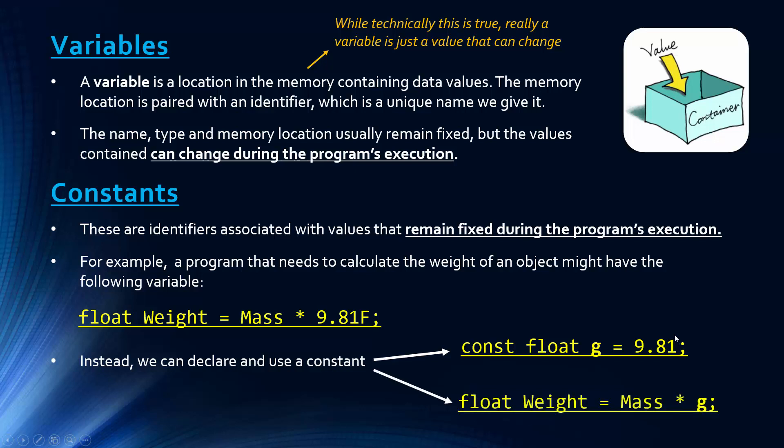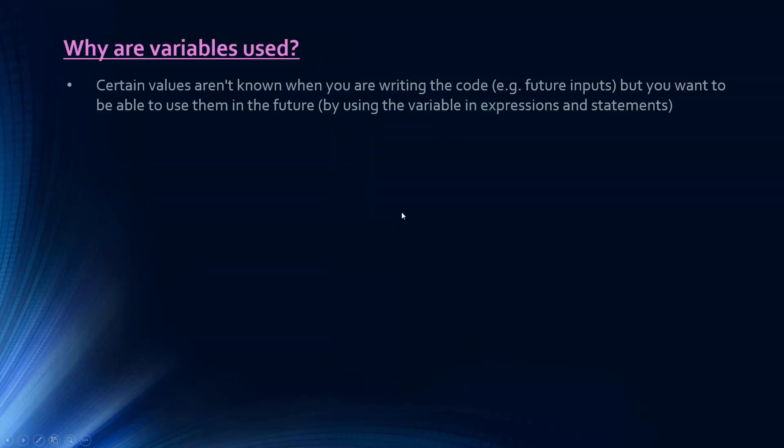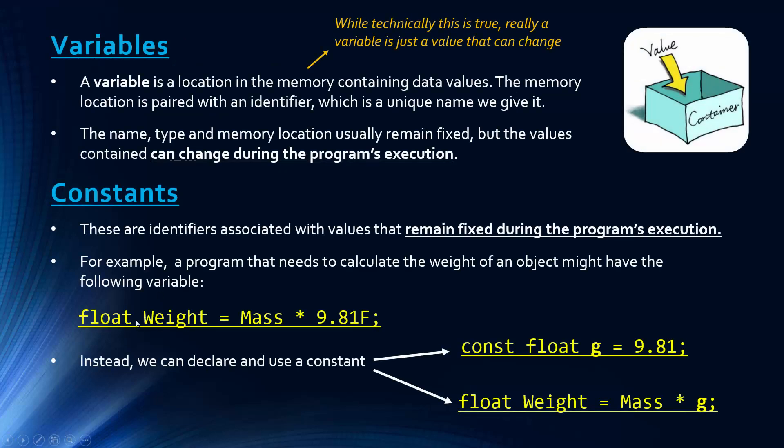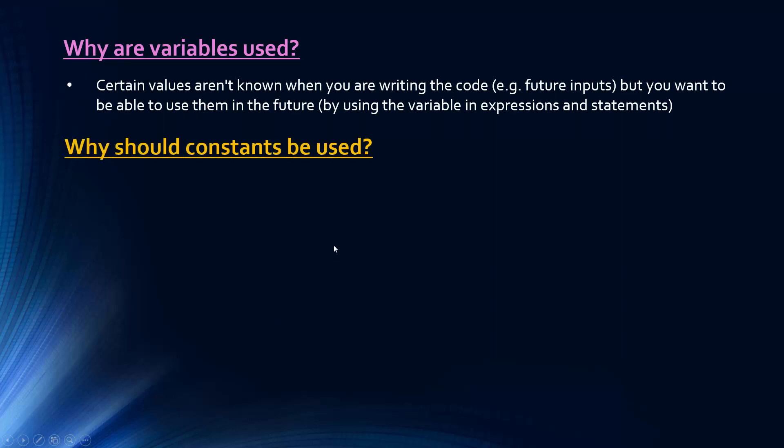That means in our variable, we're going to replace 9.81 with this constant. Well, you might say, why would we do this? First of all, if we address why variables are used - certain values aren't known when you're writing the code. You're writing code that's going to have future inputs, but you want to be able to use them in the future, so you use variables in expressions and statements.